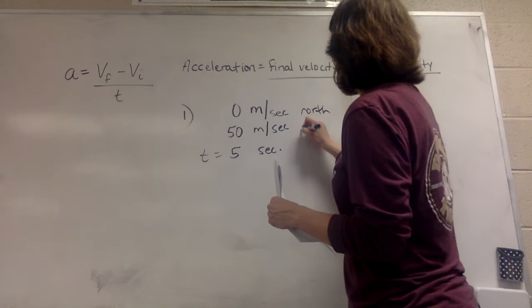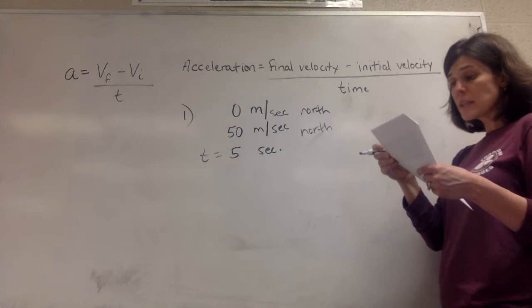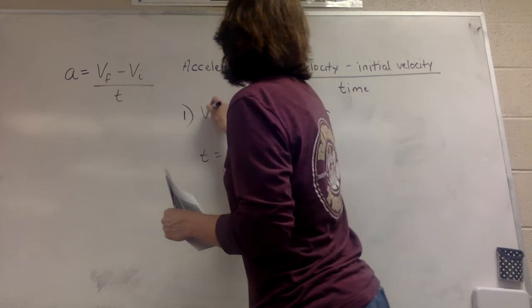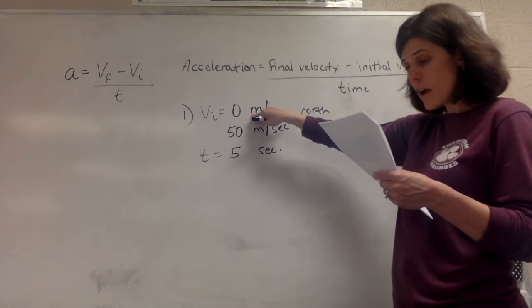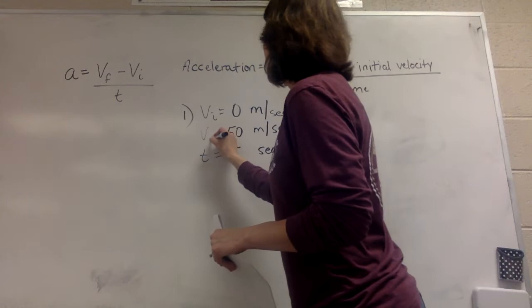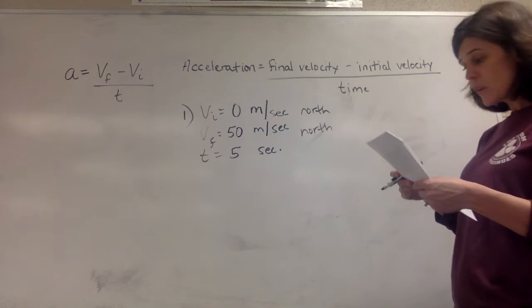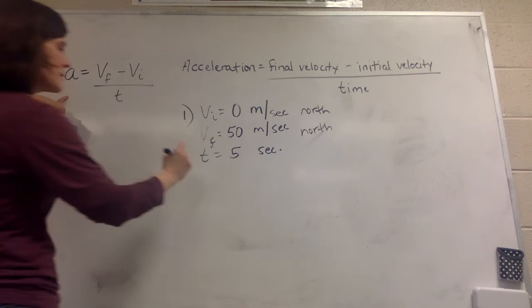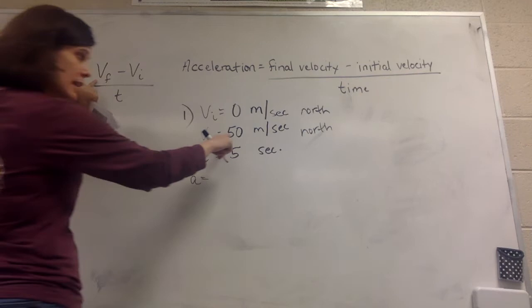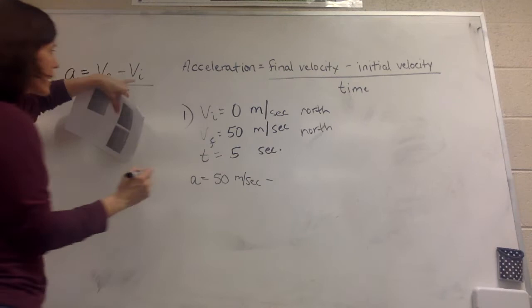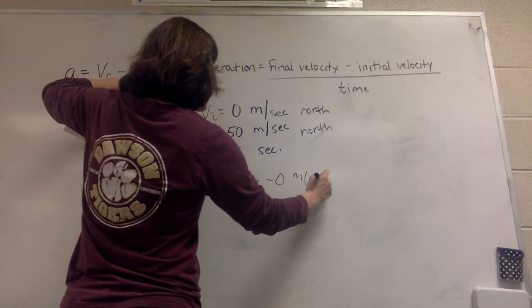It's going from zero to 50, so the starting or initial velocity would be zero. The problem says it changes from zero to 50, so the initial would be zero. The final velocity would be 50 meters per second north. It wants us to calculate the car's acceleration, so I'm going to take the equation — solving for acceleration — using the final velocity, which is 50, minus the initial velocity, which is zero, divided by the time, which is five seconds.